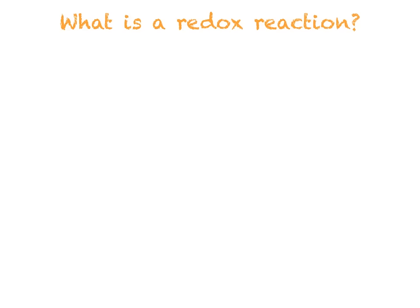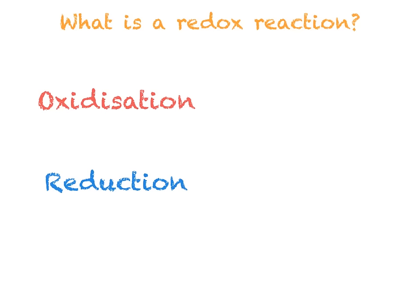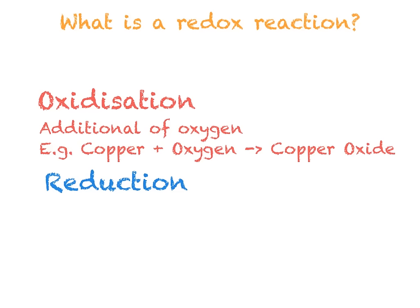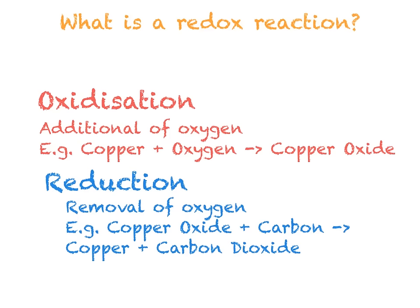Before we look at electrolysis in more detail, we need to remind ourselves about redox reactions. You'll have come across redox reactions in C1, where you looked at both reduction and oxidisation. Oxidisation was the addition of oxygen to a molecule — for example, copper plus oxygen going to copper oxide — and reduction was the removal of oxygen — for example, copper oxide plus carbon going to copper plus carbon dioxide.